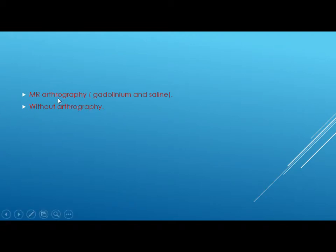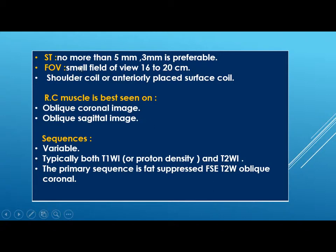Now we shift to MRI of the shoulder. We have two techniques: either with arthrography or without it. The slice thickness should be no more than 5 millimeters, preferably 3 millimeters, and the field of view should be small, between 16 to 20 cm. You should use a shoulder coil or anterior-placed surface coil. The rotator cuff muscles are best seen on oblique coronal and oblique sagittal images. Typically both T1 and T2 are taken, with the primary sequence being fat-suppressed T2-weighted oblique coronal.